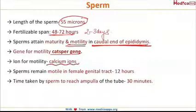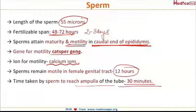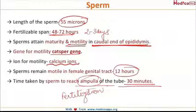Although sperms are capable of fertilizing the ovum for two to three days, they remain motile for only 12 hours. These sperms are able to reach the ampulla of the tube in 30 minutes after ejaculation. The ampulla is where fertilization occurs.